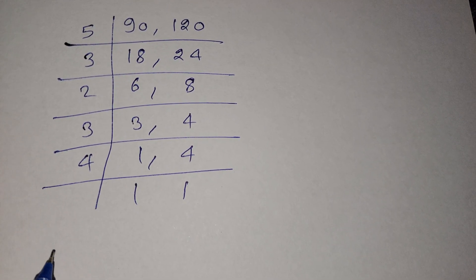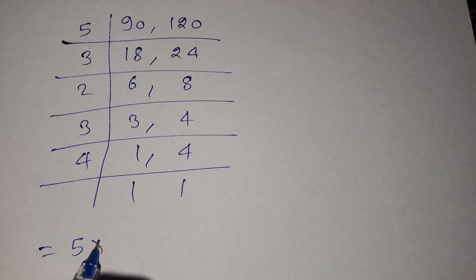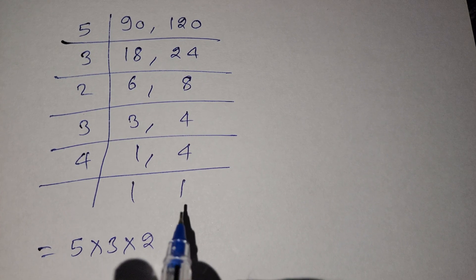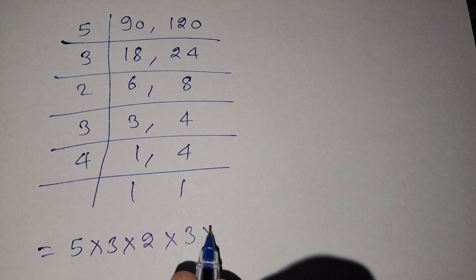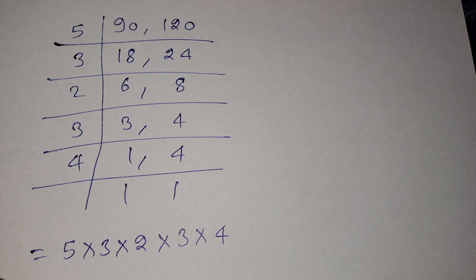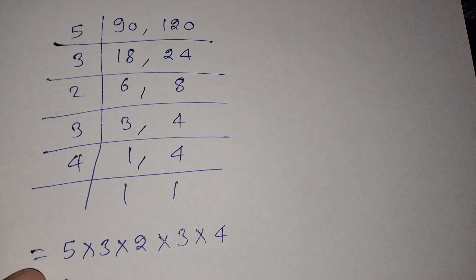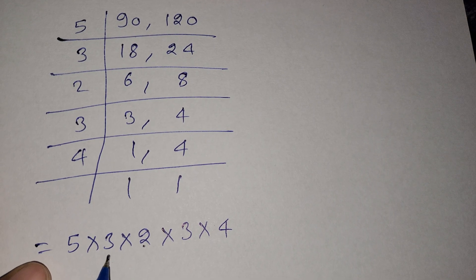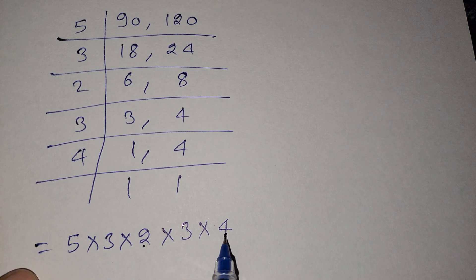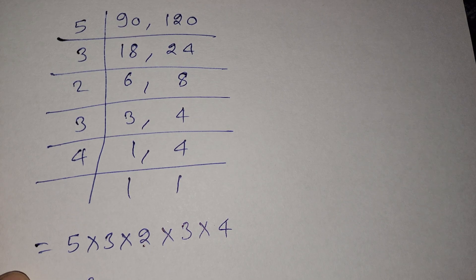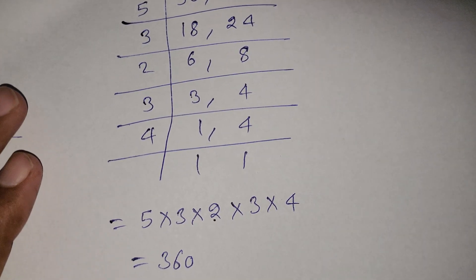Now we have the factors: 5 multiply 3 multiply 2 multiply 3 multiply 4. 5 times 2 is 10, 10 times 3 is 30, 30 times 3 is 90, 90 times 4 is 360. So our LCM is 360.